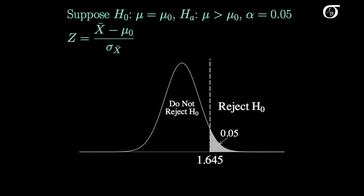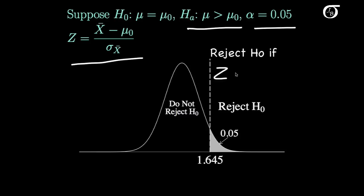If our alternative hypothesis is that mu is greater than mu0, then values of the test statistic in the right tail give evidence against the null hypothesis in favor of the alternative. So for an alpha level of 0.05, we reject the null hypothesis if the Z-value we observe is greater than or equal to 1.645.